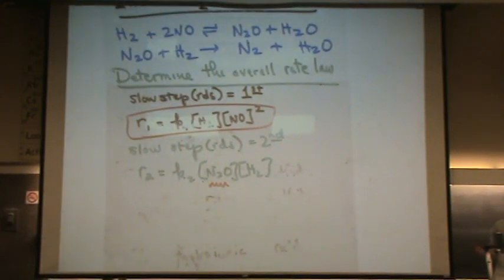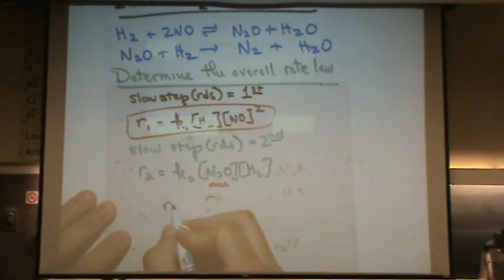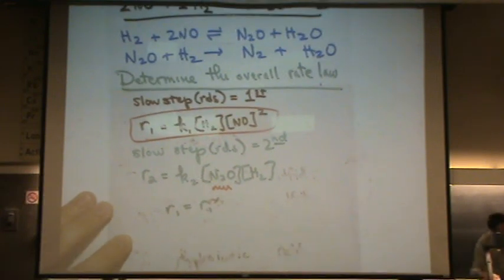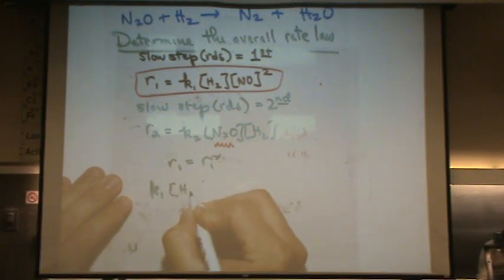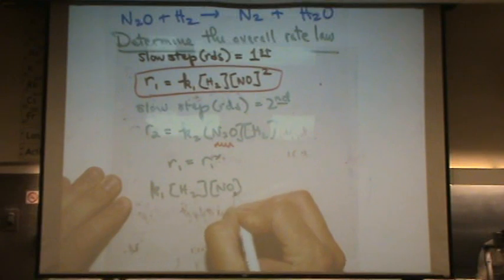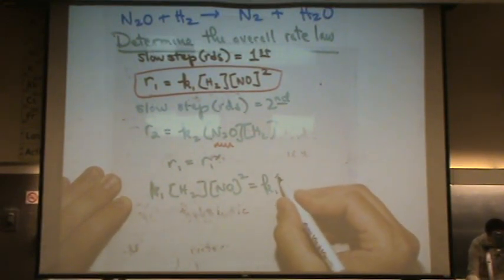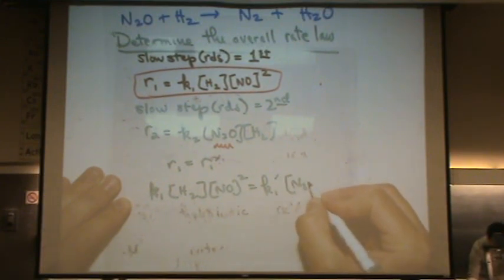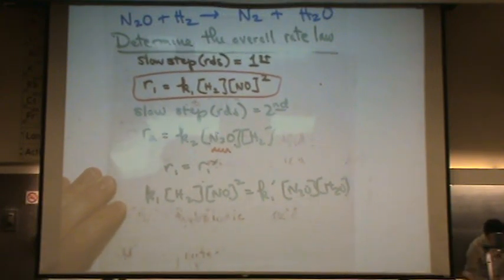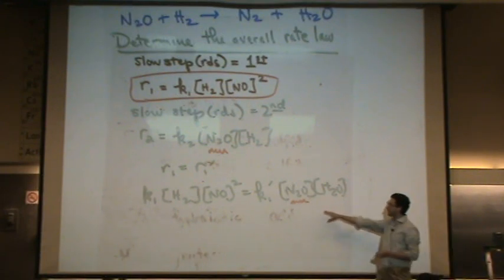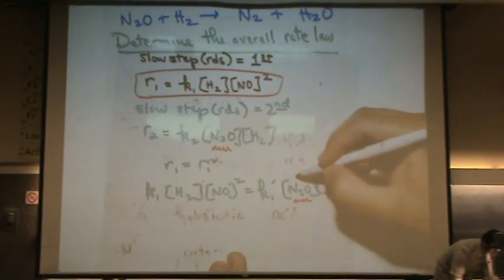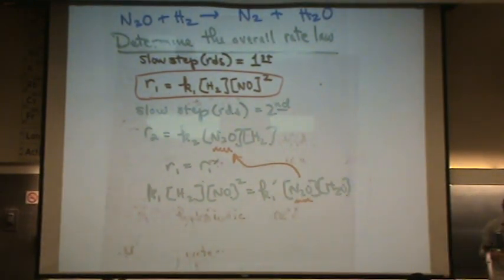Well, you go to the reversible reaction. That's the first one, it has a double headed arrow. And you'd use this assumption, rate one equals rate one reverse. That's just an assumption, but it tends to help us out a bit. So if we do that, let's write rate one forward. That's K1 times H2 times NO squared equals K1 reverse. And remember, I'm going to use primes, these little primes for reverse. N2OH2O. Now, the reason we did that is that I have now just one intermediate here, and this expression I can solve for it, and then I will ultimately plug it back in here. So it's just giving me an expression for the intermediate.